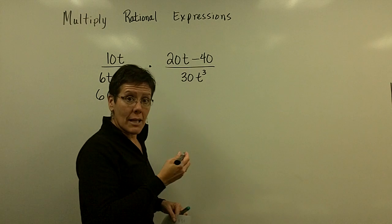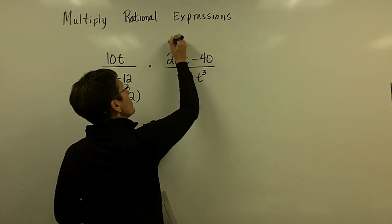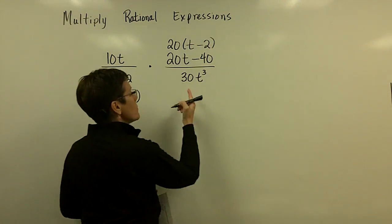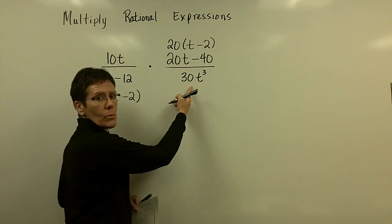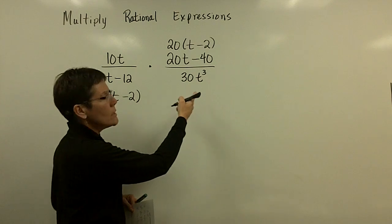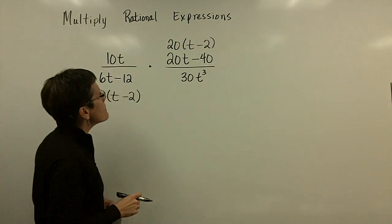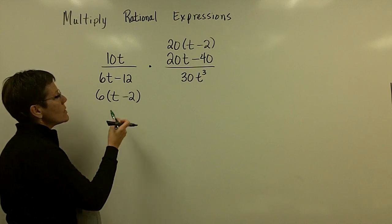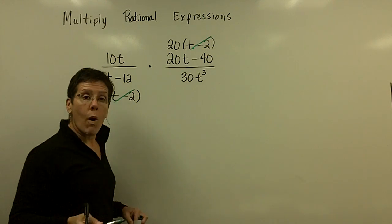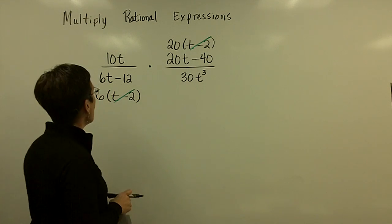Likewise, you've got to take a 20 out — not a 2, not a 10 — a 20, and then you'll have t minus 2. I could write that as 5 times 6, or 5 times 2 times 3, and t times 2 times t. But right now I'd like you to see that this binomial t minus 2 is equal to 1, and they can both be removed — one on top and one on the bottom.